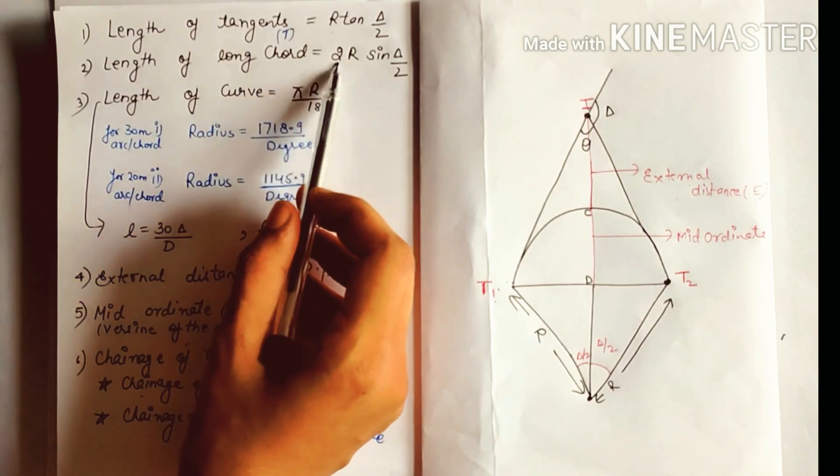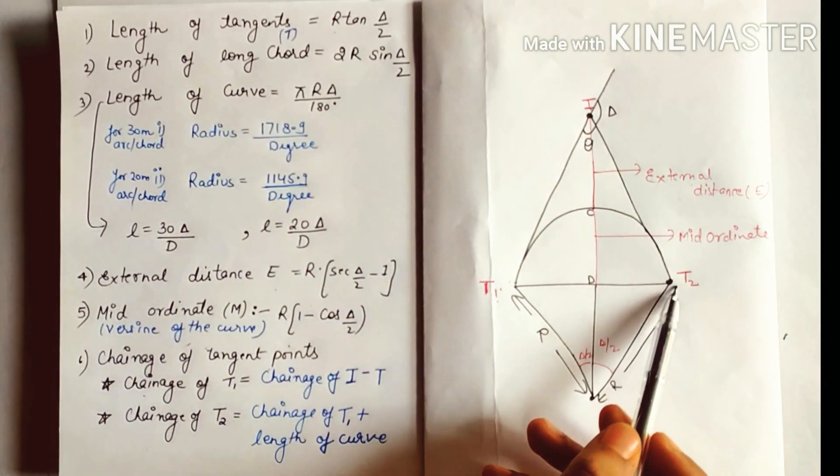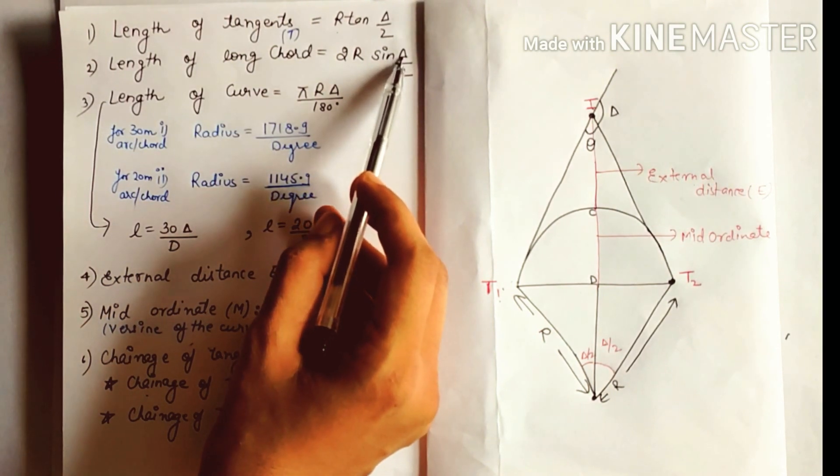Length of long chord: 2R sin(Δ/2). T1DT2 is the length of long chord. Delta is deflection angle.